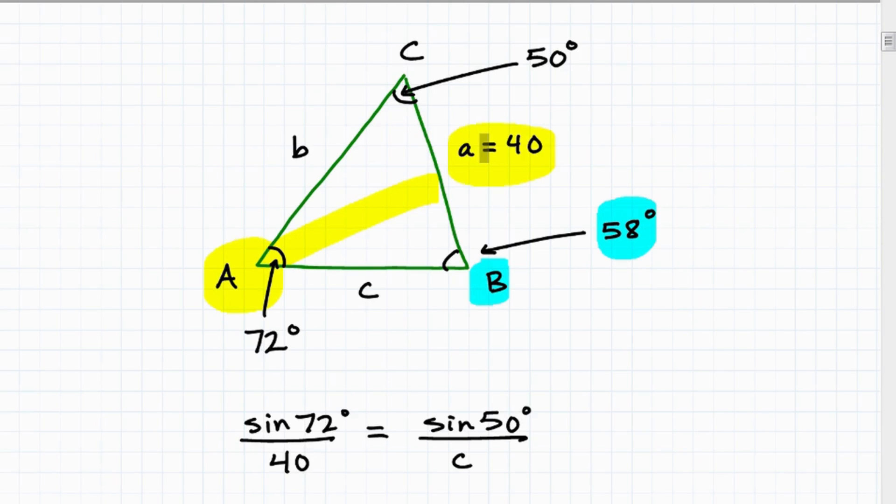You need that pair in order to really start solving the triangle using the law of sines. So here I have 72 and I have 40. That's all I need. I can create this nice ratio right here.